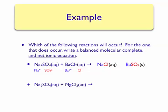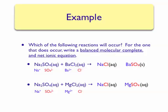Therefore, we expect that the second reaction is predicted not to occur. Let's see why. Once again, we can exchange the ions to form two possible products: sodium chloride and magnesium sulfate. We know that sodium chloride is predicted to be soluble in water since all Group 1A compounds are soluble. However, if we look at magnesium sulfate, we see that the magnesium 2+ ion does not appear in the exceptions to the sulfate solubility rule. Therefore, magnesium sulfate is predicted to be soluble in water and can be given an aqueous phase label. Therefore, the second reaction is not predicted to occur.